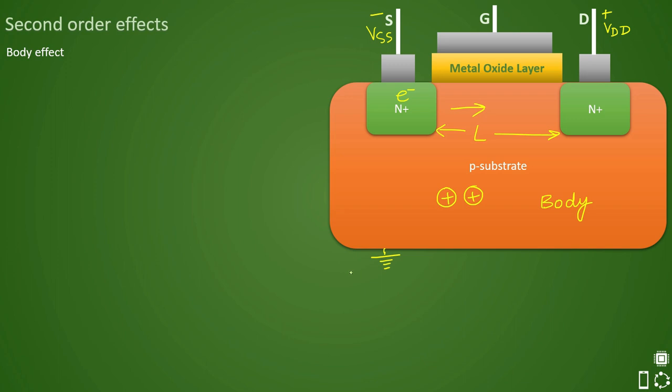We will not see that body effect. This substrate bias voltage we call it as VSB and when it is zero we do not see any body effect.